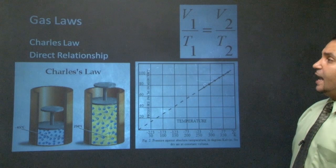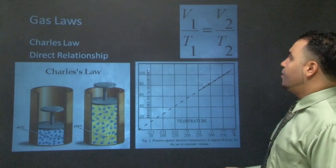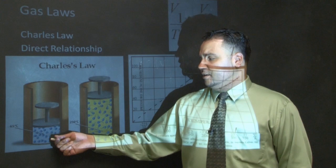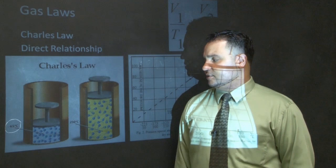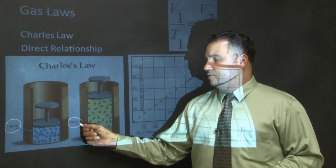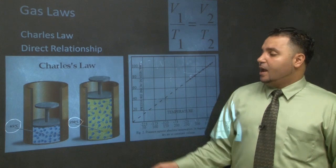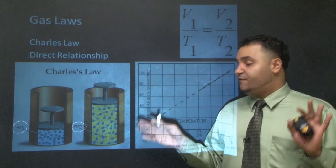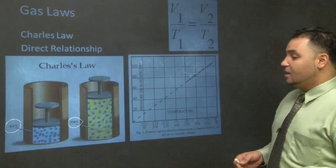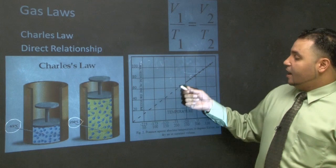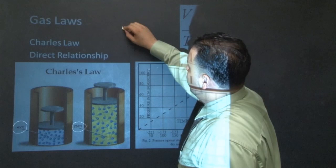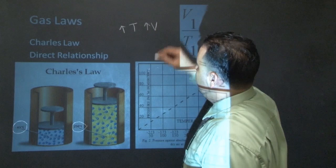Charles' Law is the second gas law, also about 200 years old. Charles had a piston over gas molecules at negative 65 degrees Celsius, then increased the temperature to 250 degrees Celsius. The piston shot up — warmer gas molecules move faster, causing more collisions and making the gas expand to occupy more volume. He graphed the data and got a straight line going up: a direct relationship. The formula is V1/T1 = V2/T2.